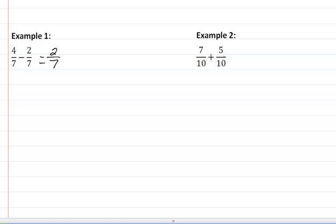And example 2, same denominator, so we have 7 plus 5, which would be 12.